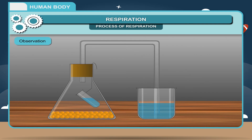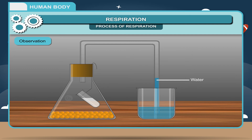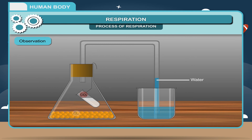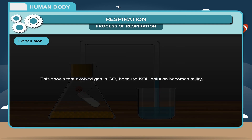Observation: After some time, you will observe that water rises in the tube. The germinating seeds use the oxygen, and the carbon dioxide evolved is absorbed in the KOH solution, causing it to become milky. Conclusion: This shows that the evolved gas is carbon dioxide, because the KOH solution becomes milky.